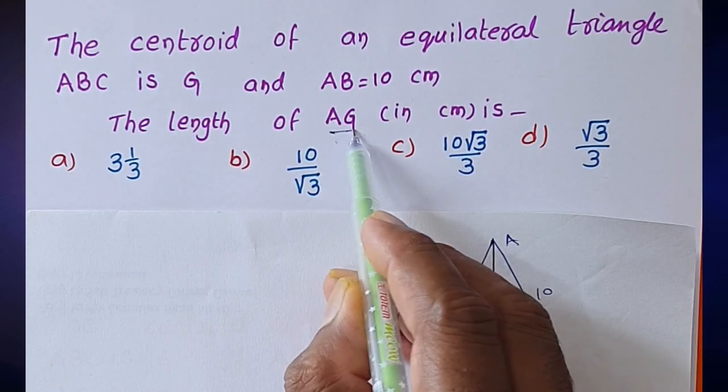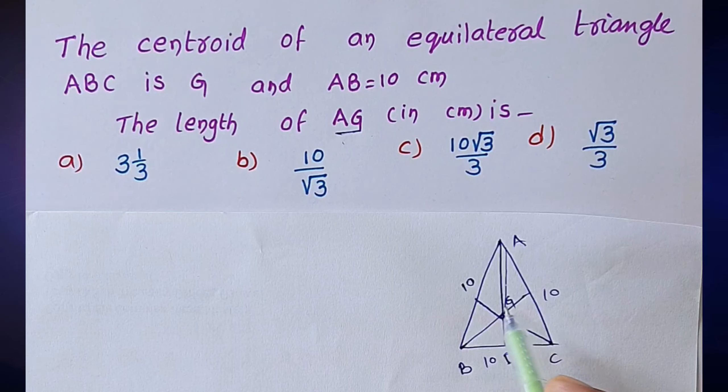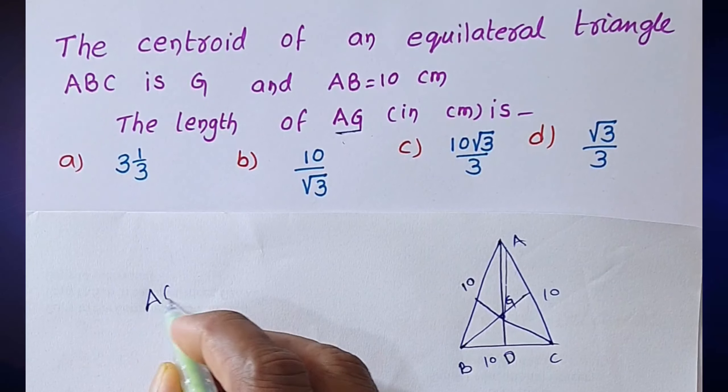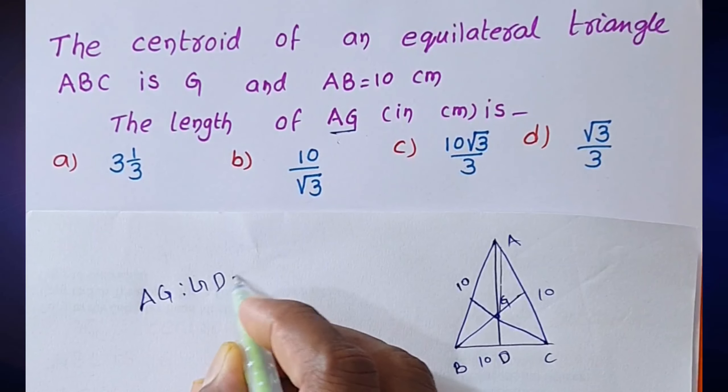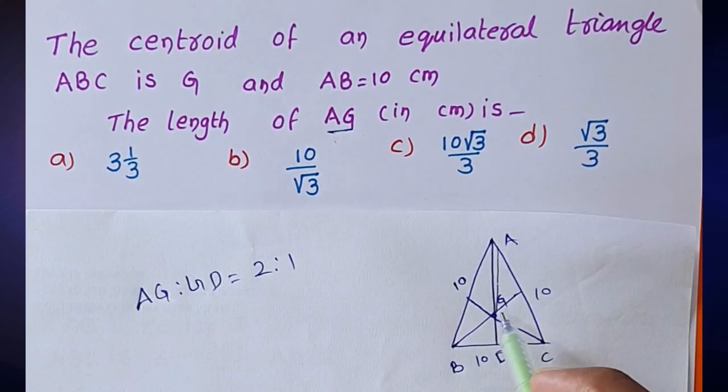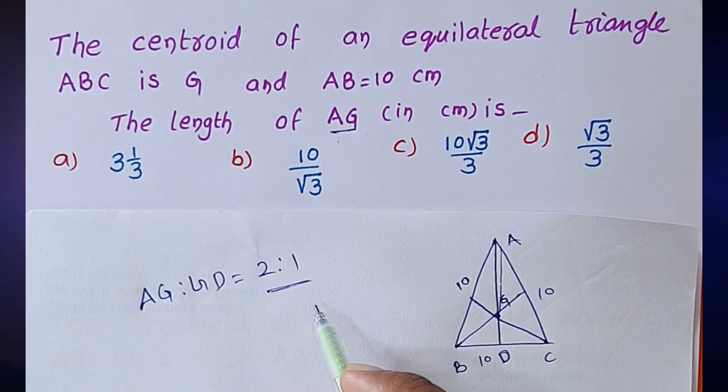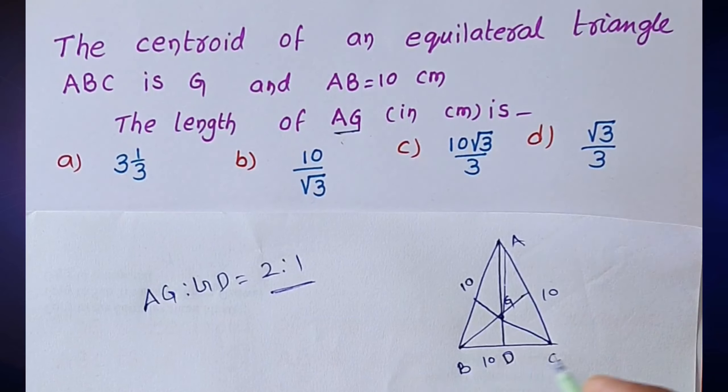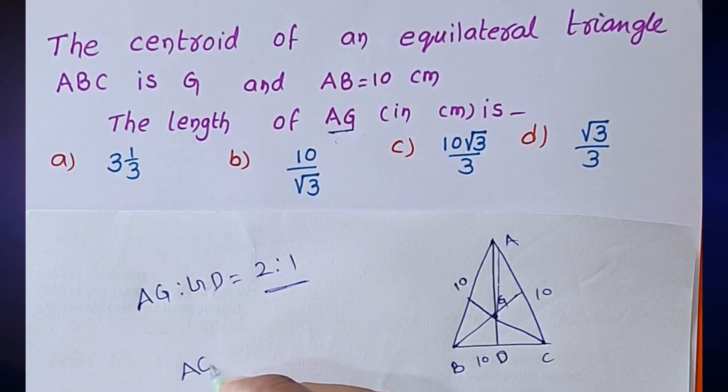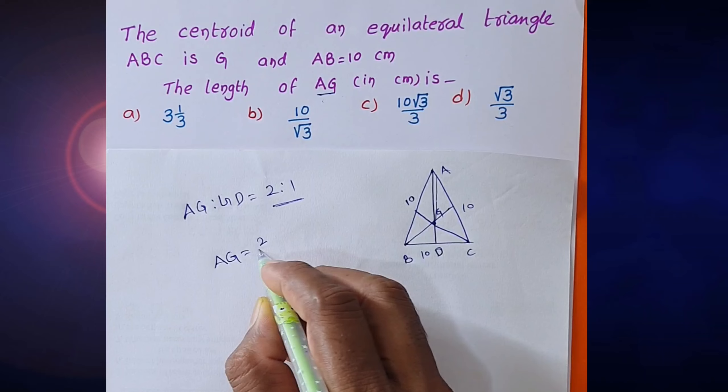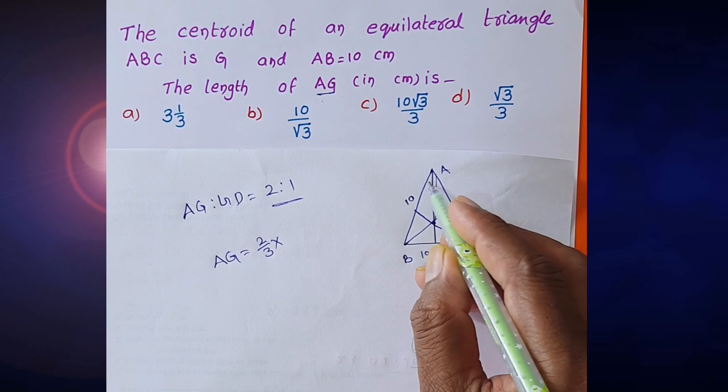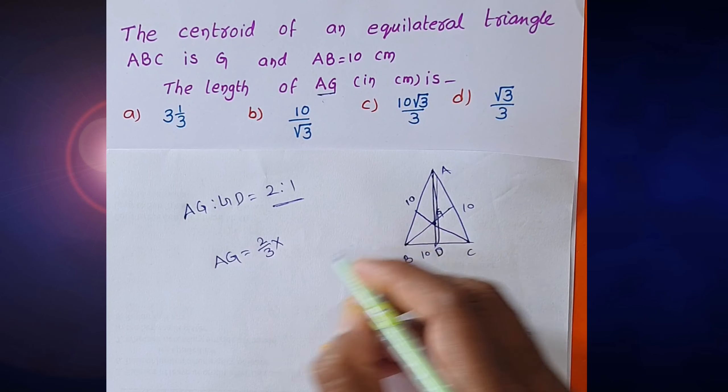Find the value of AG. We know that AG to GD is equal to 2 is to 1. So the value of AG is equal to 2 by third of the height of the median, the length of the median.